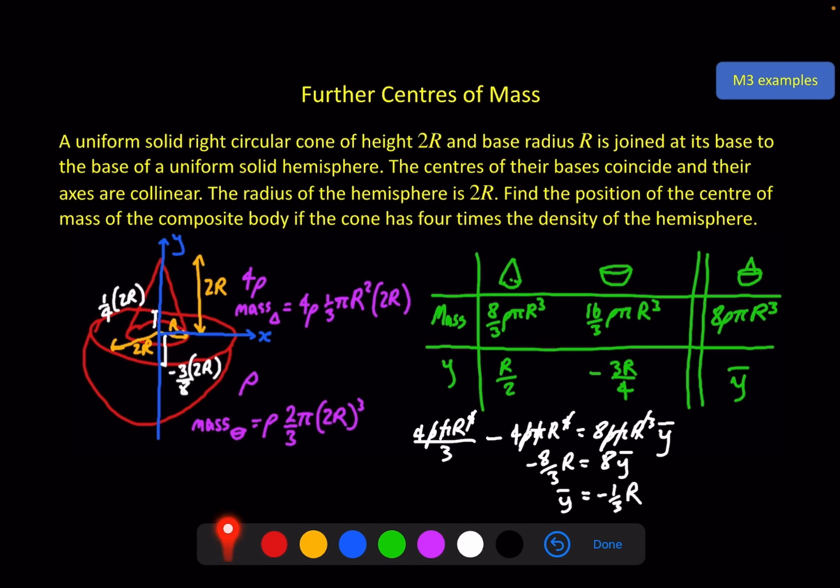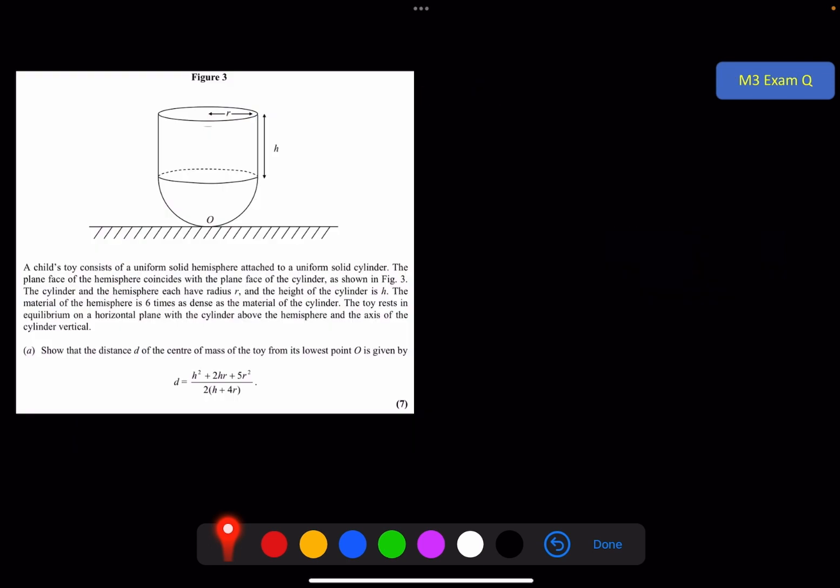So the centre of mass of the shape is 1/3 r below the join point — that is, 1/6 of the radius of the hemisphere downwards. To finish off this chapter, a final exam question.